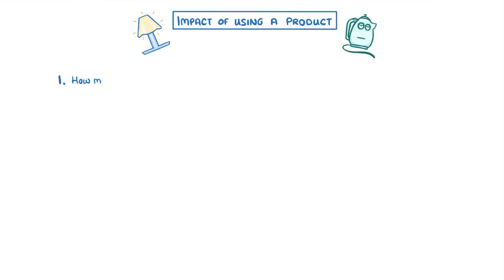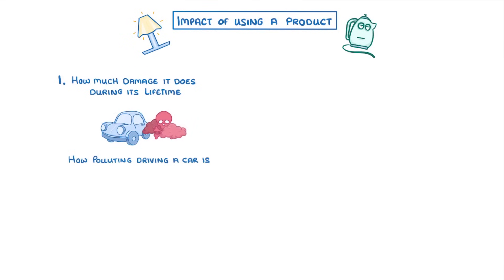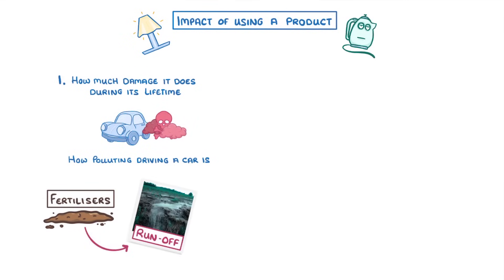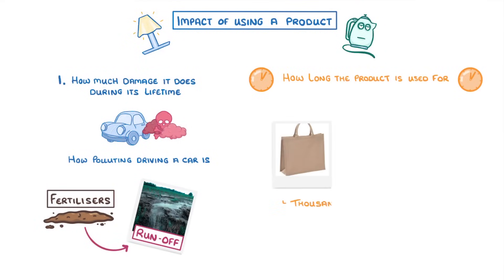When considering the impact of using a product, we need to look at two things: how much damage it does during its lifetime — for example how polluting driving a car is, or how much damage fertilisers do when we consider runoff into the environment — and also how long the product is used for. If you buy a nice bag that you use thousands of times, that's very different from a single-use paper bag.